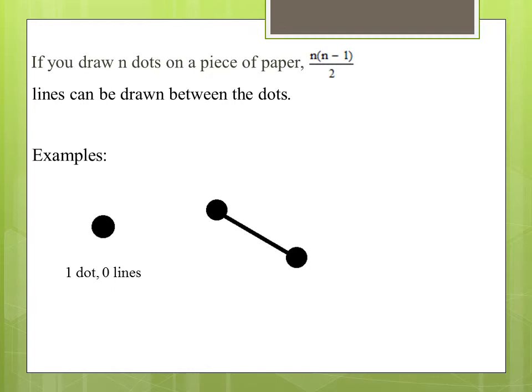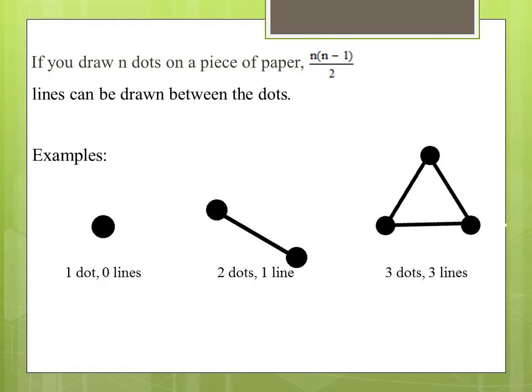In the next picture, there are two dots and one line. In the final picture, there are three dots and three lines.